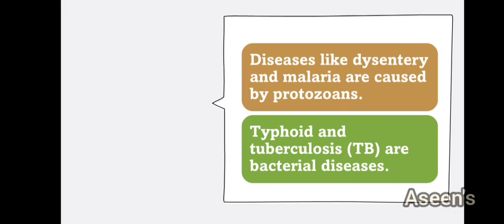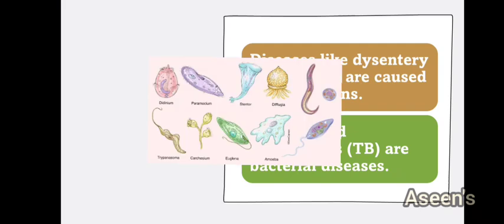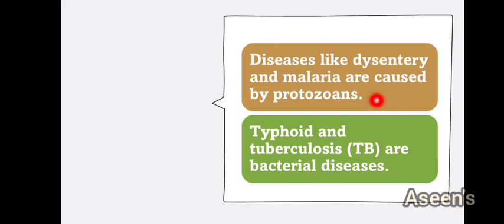To give a little more familiarity — diseases like dysentery and malaria are mainly caused by protozoans. Protozoans are nothing but amoeba, euglena, and paramecium, which you have already studied in your lower classes. Those organisms come under the family of protozoa. Similarly, typhoid and tuberculosis (TB) are bacterial diseases caused by different forms of bacteria.